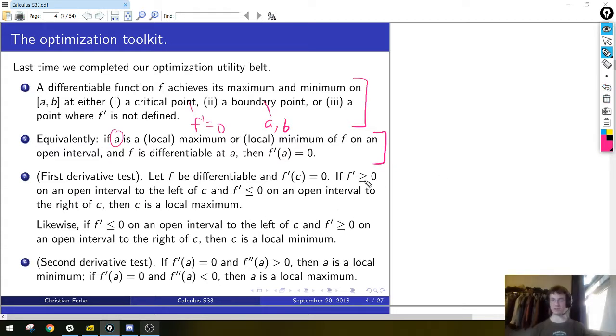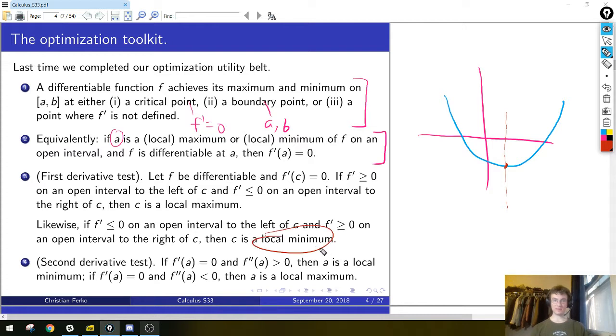So something we didn't state explicitly, but we have used without giving it a name, is this thing called the first derivative test. If you have a function, maybe it looks like this in the vicinity of some point, and you're trying to decide whether a point where the derivative vanishes is a max or a min, one way to decide that is the first derivative test. If you know that the derivative is negative on some open interval to the left of the point C you're interested in, so the function is decreasing to the left of that point C, and the derivative is positive, or at least non-negative, on some interval to the right of C, so the function is increasing here, then you know C is a local min, as opposed to a local max. And clearly, if you reverse those inequalities, so the derivative is positive to the left and negative to the right, then it's a local maximum.